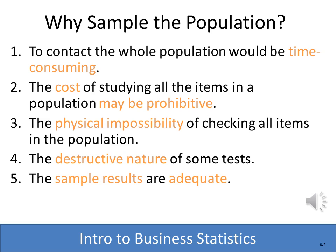One reason we don't survey the whole population is that it's very time-consuming. It could also be very cost prohibitive. It might be impossible to reach every item in a population, and it might be destructive. For instance, if you were working for a bullet manufacturer and wanted to sample every bullet to see if it fired well, that would destroy the bullet — so you'd have to use a sample.